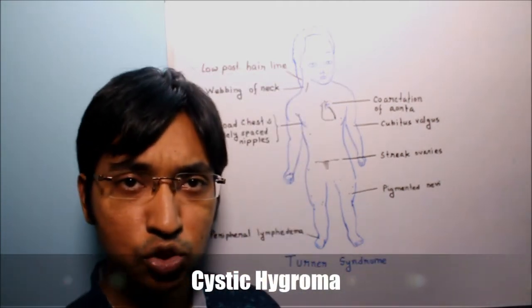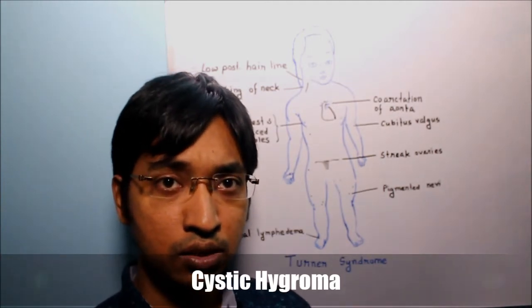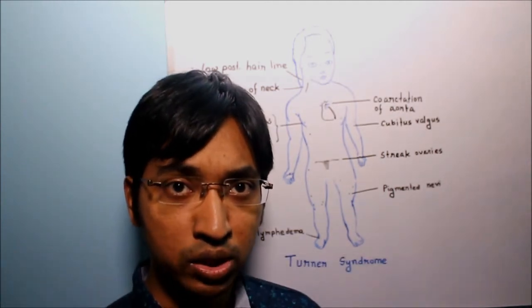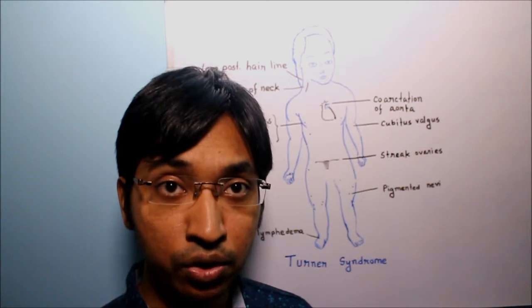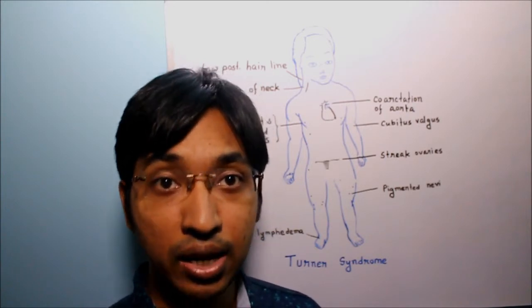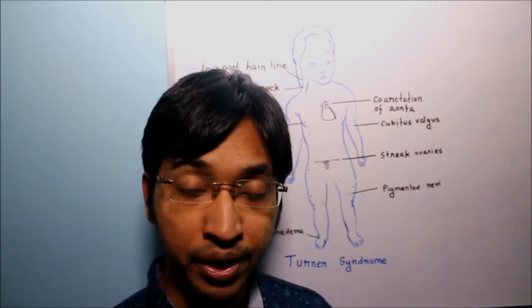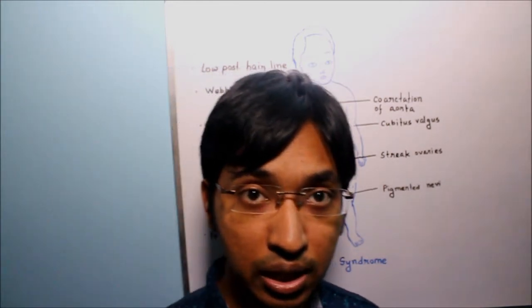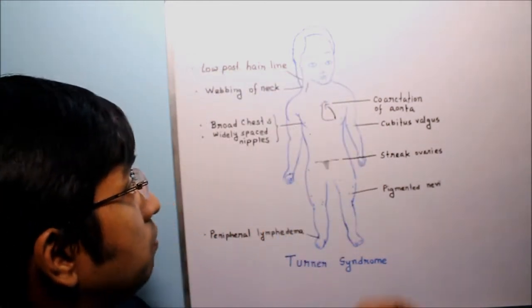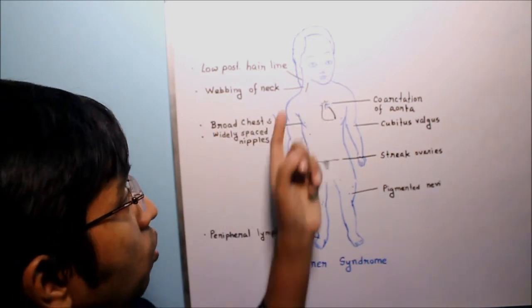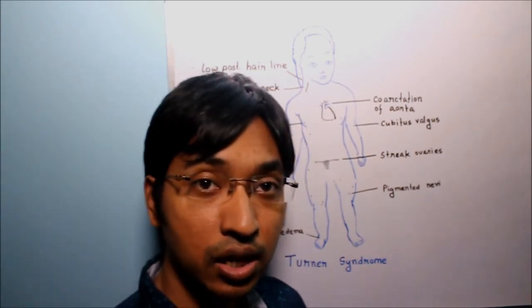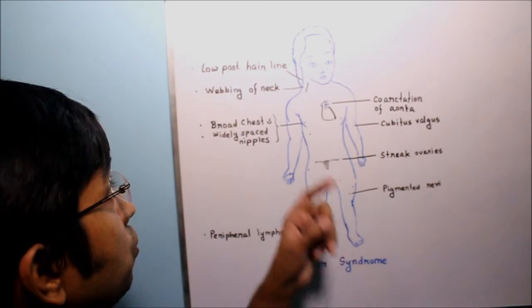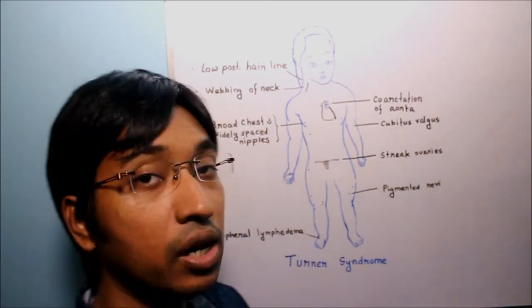Now as these individuals develop the swelling gradually subsides. However it leaves bilateral neck webbing and persistent looseness of the skin of the nape of the neck. So you can see in this image I have also drawn webbing of neck and another interesting clinical feature is the low posterior hairline.